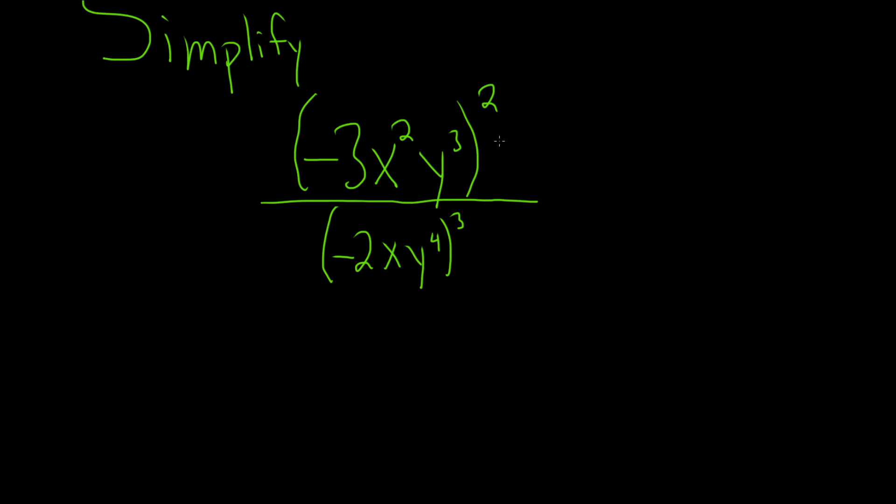So first if you look at the numerator, the whole thing is being squared. This basically means that you square each of the factors. So you square the negative 3, you square the x squared, and you square the y cubed over